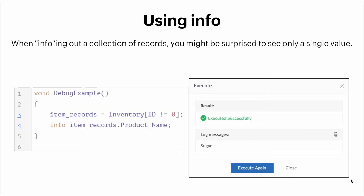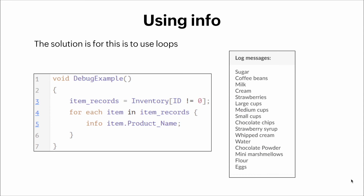Let's talk about using the info command. When infoing out a collection of records, sometimes you might be surprised that you don't get quite the value you were expecting. We have an example: on the left side, a function with a fetch command fetching records from an inventory table, but when we info out the records we think we're going to receive, on the right side we only get one result. That's the power of the info command — by using info, we get to see what we actually hold within certain variables.